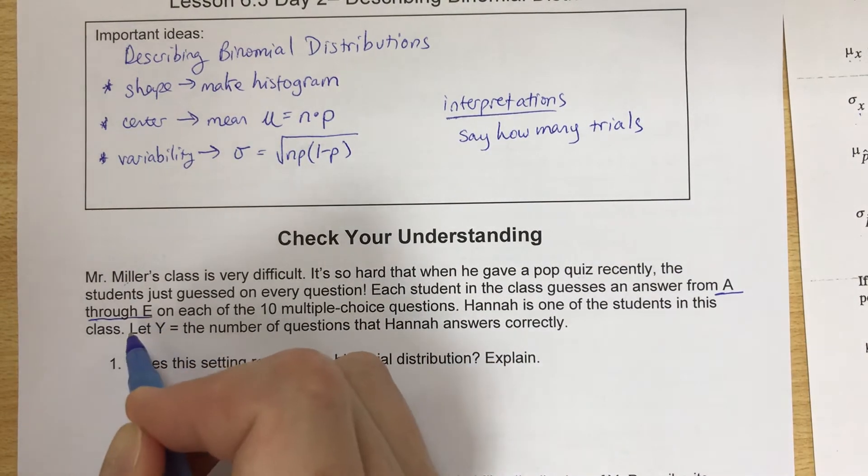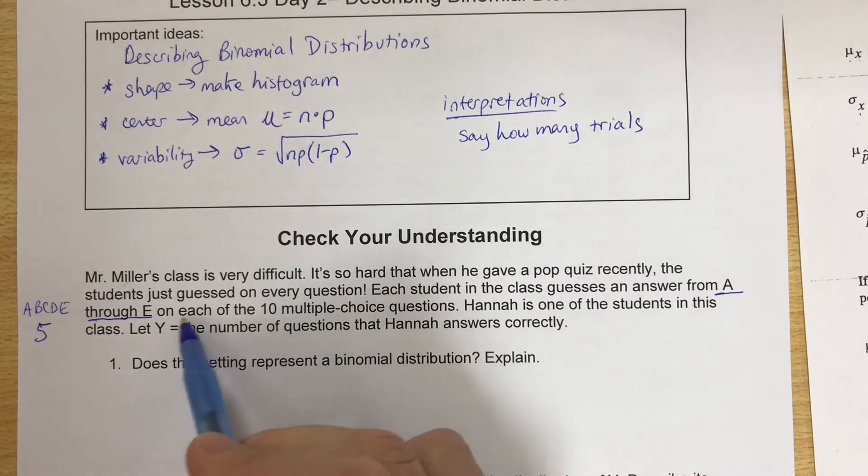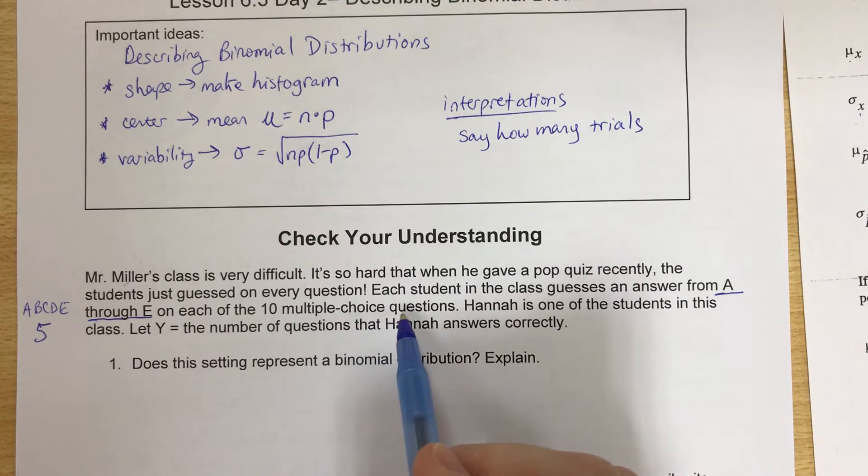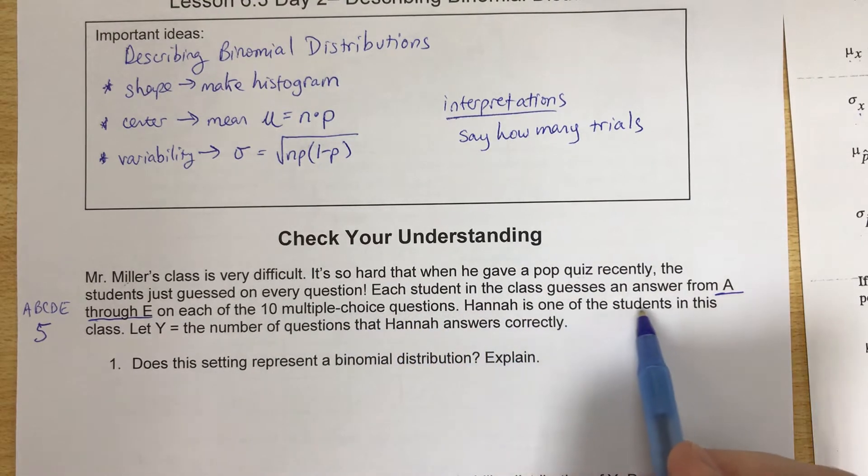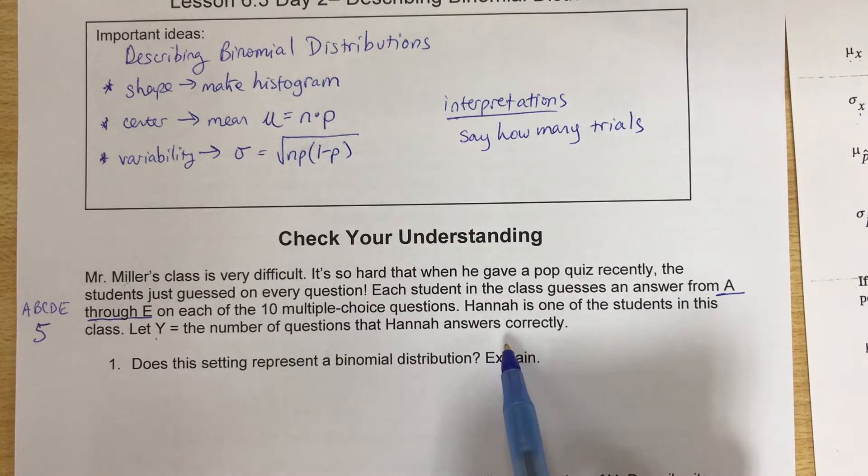That means the choices are A, B, C, D, E, five choices. On each of the 10 multiple choice questions, Hannah is one of the students in this class. Let Y equal the number of questions that Hannah answers correctly.